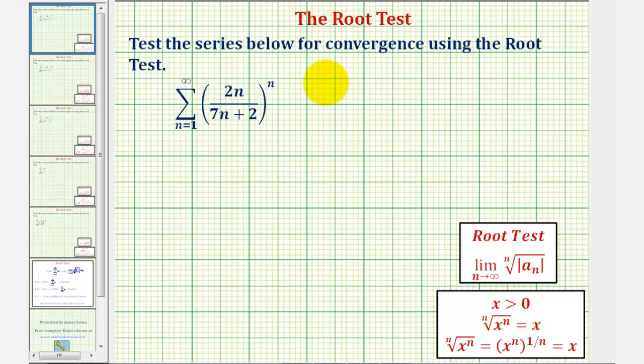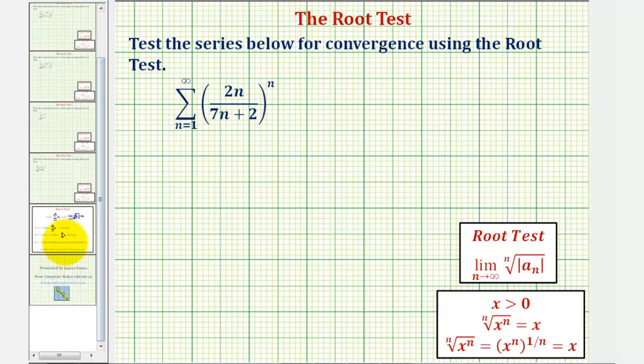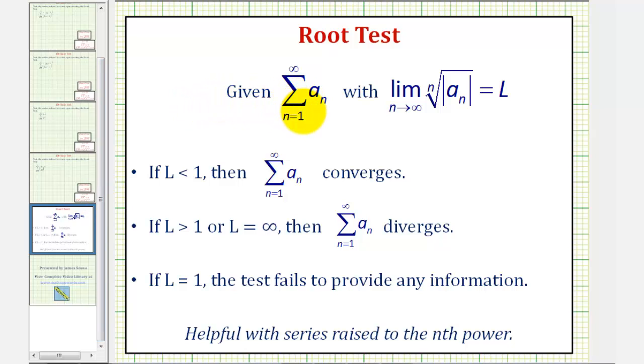We want to test the series below for convergence using the root test. To apply the root test, given the summation of a_n, we take the limit as n approaches infinity of the nth root of the absolute value of a_n, which will equal L. If L is less than one, then the series converges.